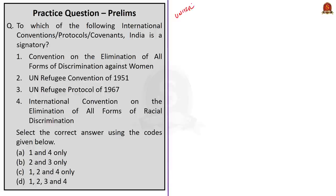The next question is about UNHCR. To which of the following international conventions or protocols is India a signatory: Convention on the Elimination of All Forms of Discrimination Against Women, UN Refugee Convention of 1951, UN Refugee Protocol of 1967, or International Convention on the Elimination of All Forms of Racial Discrimination? India is not a signatory to the UN Refugee Convention of 1951 or its 1967 Protocol, so eliminating the second and third items, the correct answer is option A — items 1 and 4. India is a signatory to the Convention on the Elimination of All Forms of Discrimination Against Women and the International Convention on the Elimination of All Forms of Racial Discrimination.